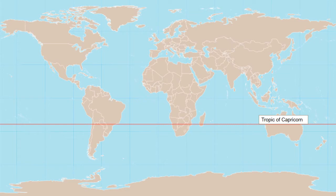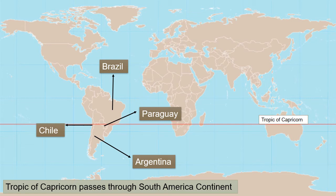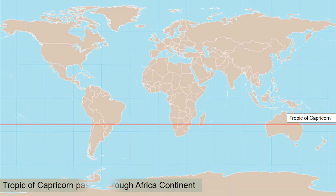Starting with South America continent — the Tropic of Capricorn passes through this continent. There are four countries: first is Chile, second is Brazil, third is Paraguay, and the fourth one is Argentina.